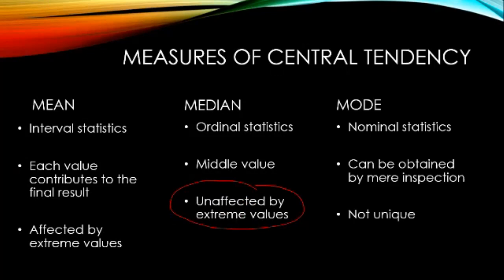The mode is a nominal statistic — we can obtain it if data is in at least nominal scale, which includes ordinal, interval, and ratio. The mode can be obtained by mere inspection; you don't always need to compute. The value or item with the highest frequency is your mode. And the mode is not unique, as we'll illustrate later.